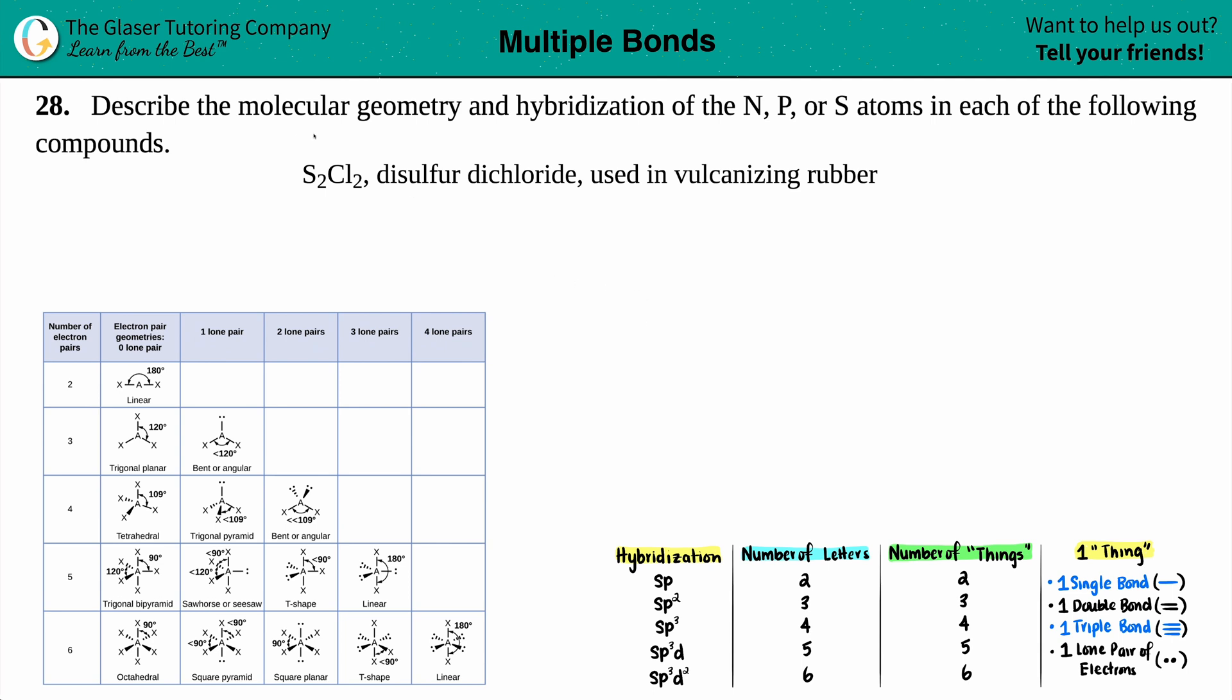Number 28: Describe the molecular geometry and the hybridization of the nitrogen, phosphorus, or sulfur atoms in each of the following compounds. We have S2Cl2, which is disulfur dichloride, used in vulcanizing rubber. That's an interesting piece of information, but let's just find the molecular geometry and the hybridization.